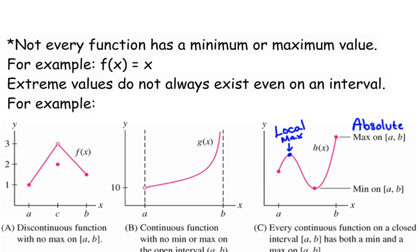What do you do if two maximums have the same y value? Then they're both maxima — it has two absolute maximum values. Good questions.